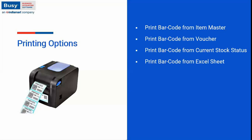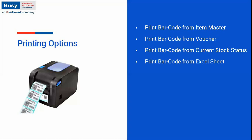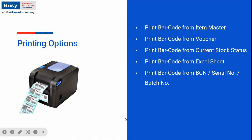The Excel sheet option handles external data — not Busy data. You can maintain item name, item alias, item price, and other details in Excel, then import that data into the software to generate barcodes. Note that this generated barcode is considered Excel data, not Busy data. Another option is printing barcode from barcode number, serial number, or batch number — useful if you manage inventory with BCN, serial number, or batch number.